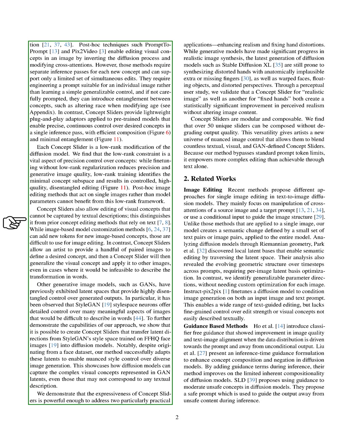There are techniques like prompt-to-prompt and pix-to-pix that allow you to edit visual concepts in an image by reversing the diffusion process and modifying cross-attentions. However, these methods have their own limitations. They require separate inference passes for each new concept and can only support a limited number of simultaneous edits. They also require engineering a prompt suitable for an individual image rather than learning a simple generalizable control. If not carefully prompted, they can introduce entanglement between concepts, such as altering race when modifying age.